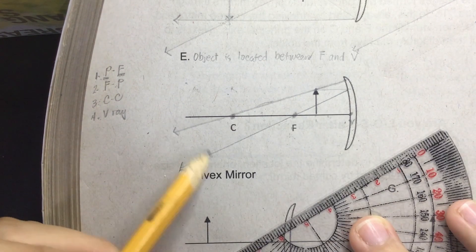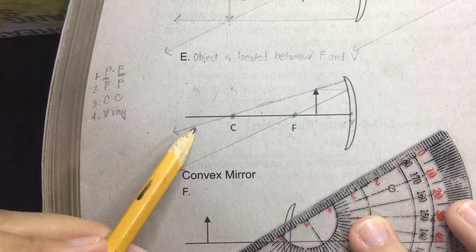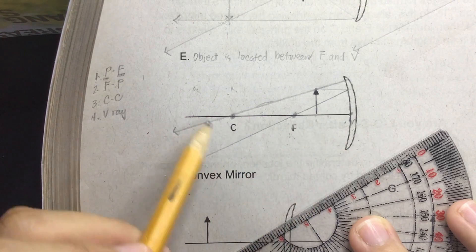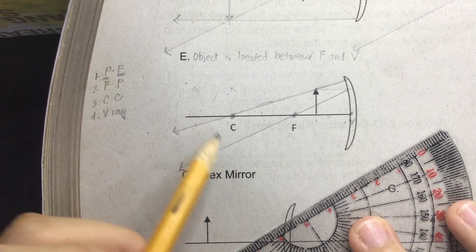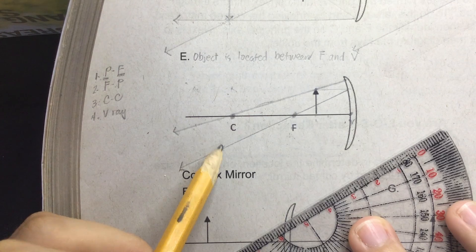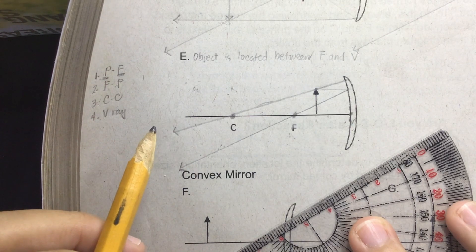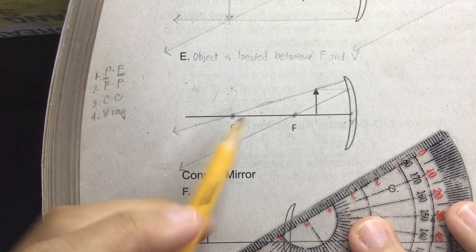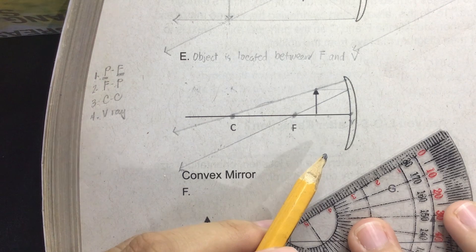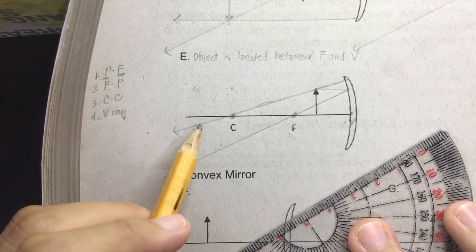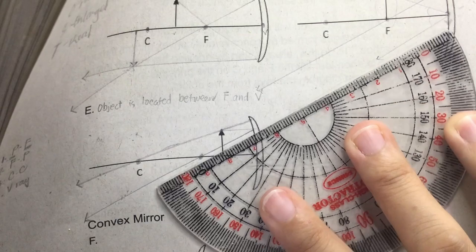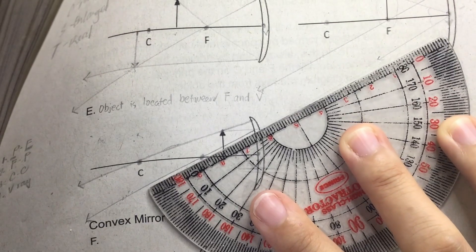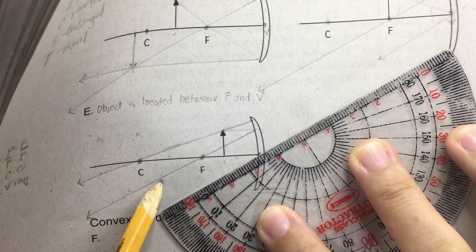So this time we have two reflected rays in front of the mirror. Okay, so did they intersect or meet at a specific point? No. So can we say that there's no image formed in this diagram? Not yet. If the reflected ray meets at the back of the mirror, we use virtual rays. So let's extend the reflected ray at the back of the mirror to see if they intersect at a specific point.